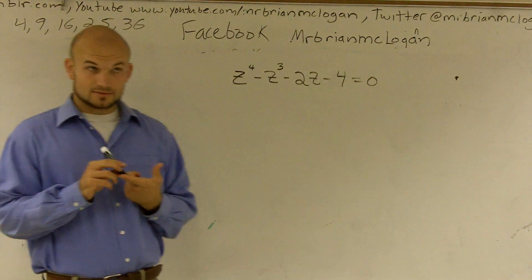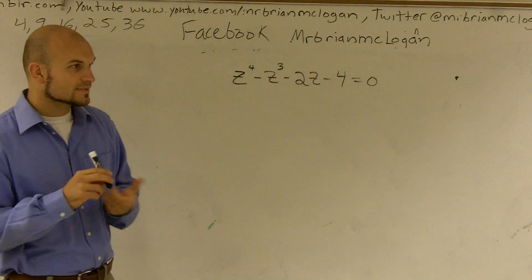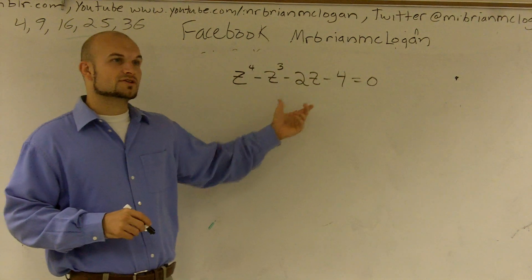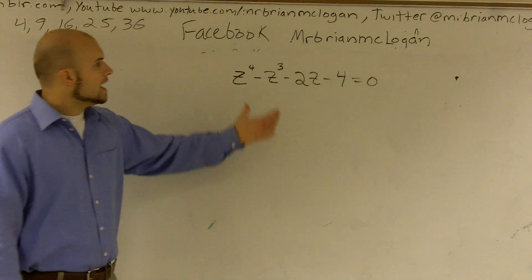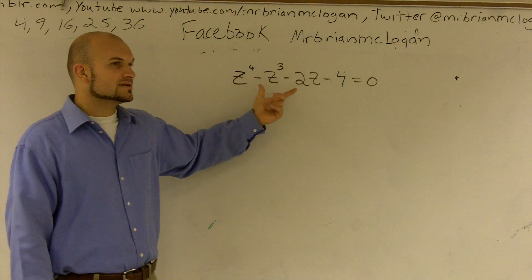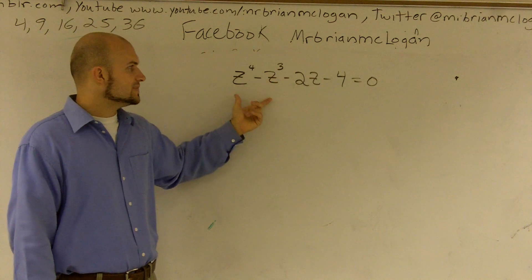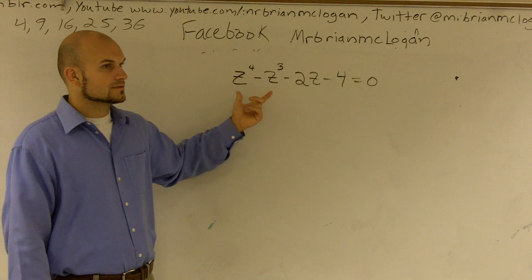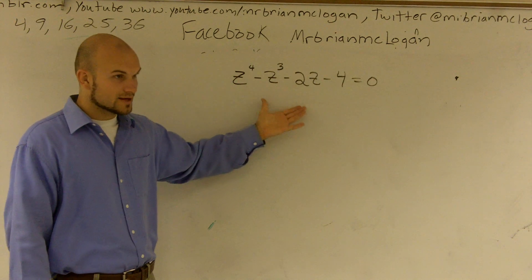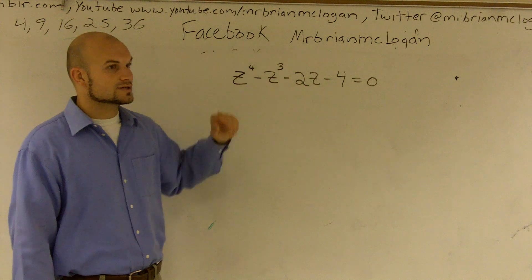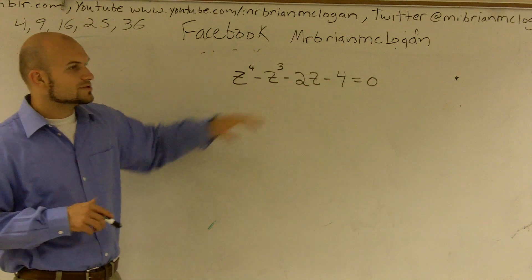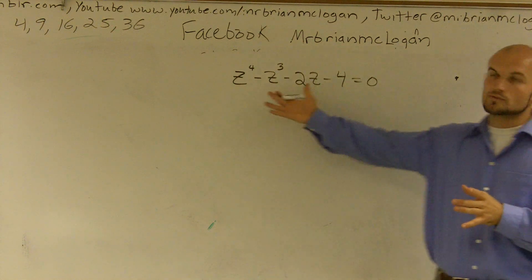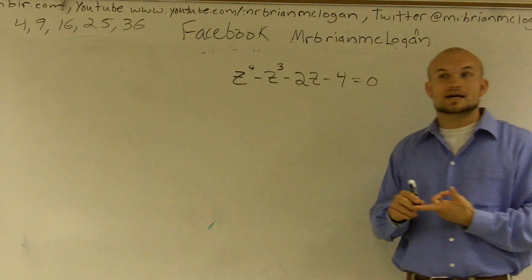When we're trying to find the zeros, the first thing we want to do is always look and see if you can factor it. When I see four terms, I automatically think factor by grouping. However, it doesn't matter any way that I group these. There's no way you can group these to factor out any number. So factoring is not going to work.